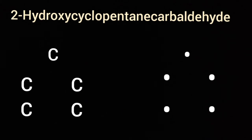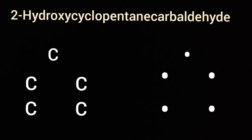It is written as carbaldehyde when the carbon atom of the functional group is not counted in the parent chain. Pent means five carbon atoms, cyclo means it is cyclic. So let us put five carbon atoms in a ring structure.